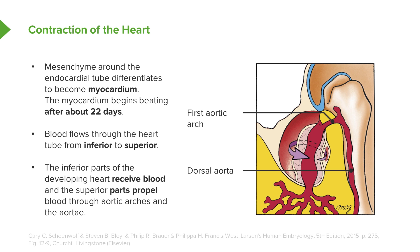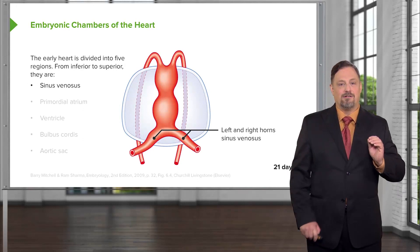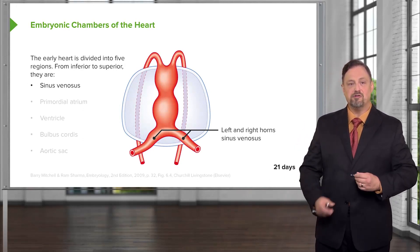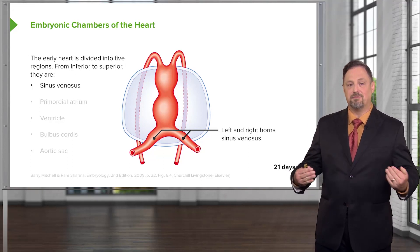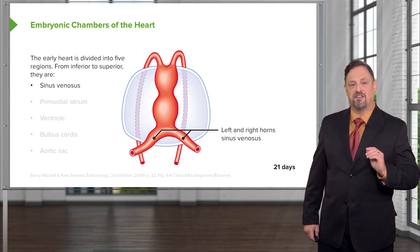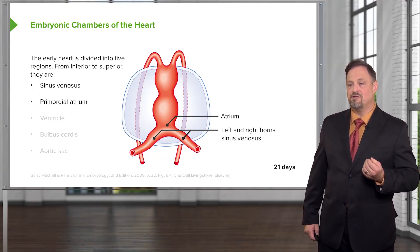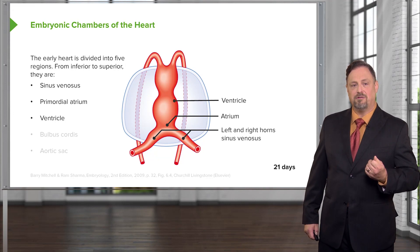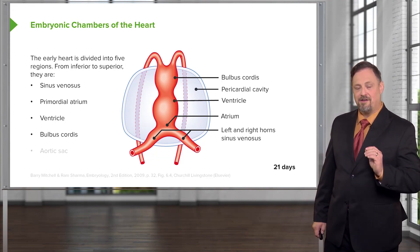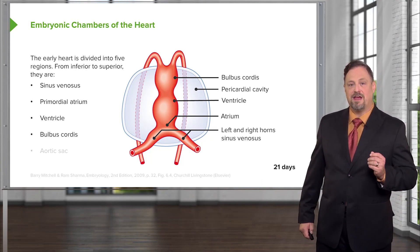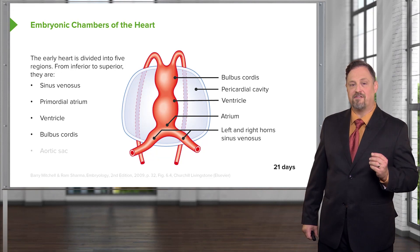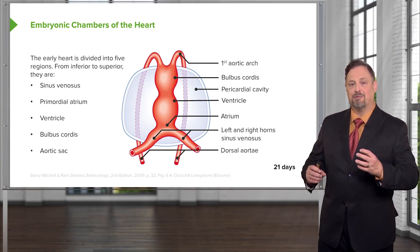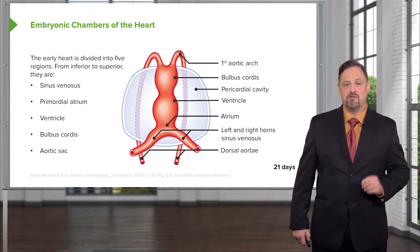Those aortic arches carry the blood dorsally to a pair of aorta. At this point, the heart instead of being a simple cylindrical tube is going to develop some distinctive areas that bulge outward. The first and most inferiorly is the sinus venosus, the part that receives blood from the body. The sinus venosus pumps blood to the primitive atrium. From there, the atrium pumps blood to the embryologic ventricle and then to an area called the bulbus cordis. Thereafter, blood travels through aortic arches to reach the dorsal aorta. A common chamber called the aortic sac receives the blood from the bulbus cordis and distributes it through aortic arches to the dorsal aorta.